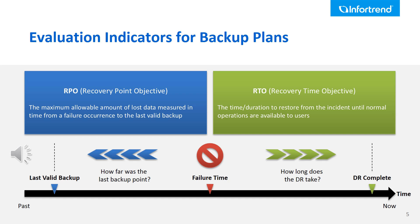Let's look at a picture to clearly understand what RTO and RPO mean. The black horizontal arrow represents the time axis. At a certain point in time, the IT environment has failed due to the reasons mentioned previously. RTO means how long does the disaster recovery process take — the IT environment is unavailable during this period, so how long can the end user accept this? As for RPO, it addresses how far back the last backup point was. If the last backup point was very close to when the disaster happened, there is not much data the end user may lose. But if the last valid backup was a week ago, will the end user accept that?